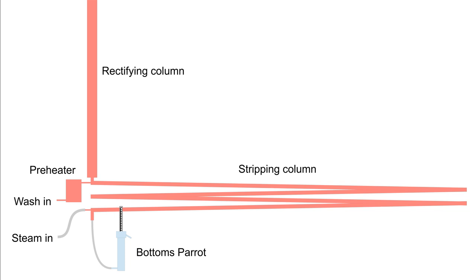A continuous distillation column has preheated wash added as a liquid between the cooler rectifying column above and the hotter stripping column below. So the stripping column must be heated by other means, which is to add steam at the bottom.